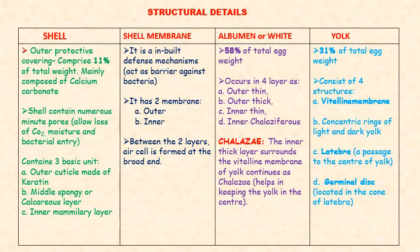The albumin or white is about 58% of the total egg weight. It has four layers: the outer thin, then outer thick layer, then inner thin layer, and then inner thick layer that is actually the chalaza. Chalaza is a proteinaceous structure surrounding the yolk which becomes like a thread or fiber and helps in holding the yolk at the center. The yolk is about 31% of the total egg, and consists of four structures: outside the vitelline membrane, then concentric layers of light and dark shade, then a passage leading to the center of the yolk, and at the top surface a germinal disc that has an important role for fertilization.